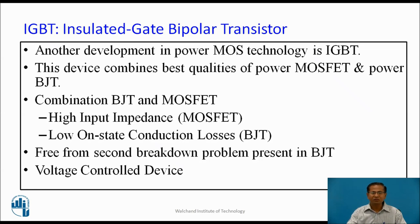IGBT is free from the second breakdown problem present in BJT. BJT is NTC, so there is a possibility of second breakdown. But IGBT is PTC — as temperature increases, resistance increases and current reduces. So there is no possibility of second breakdown. IGBT is a voltage control device.